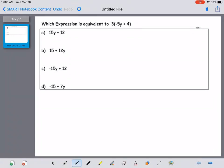So we need to identify which expression of these four choices is equivalent to the expression 3 times the quantity negative 5y plus 4.